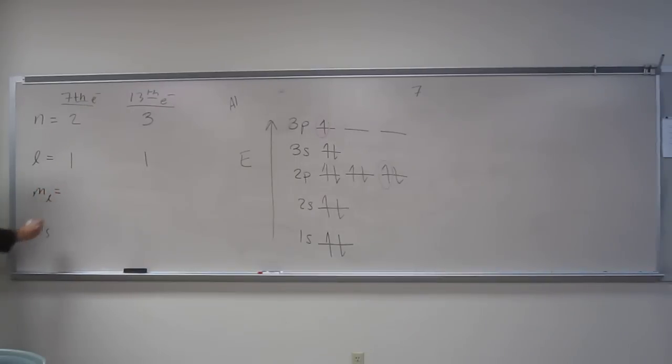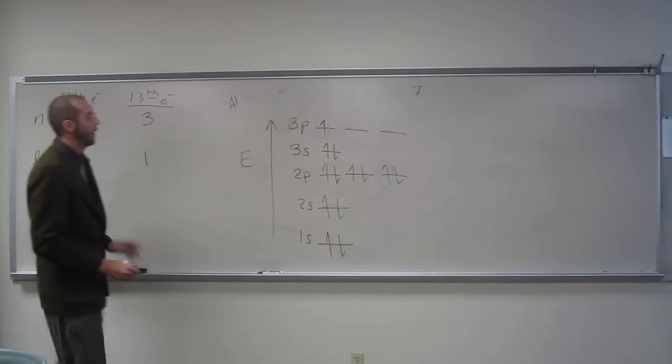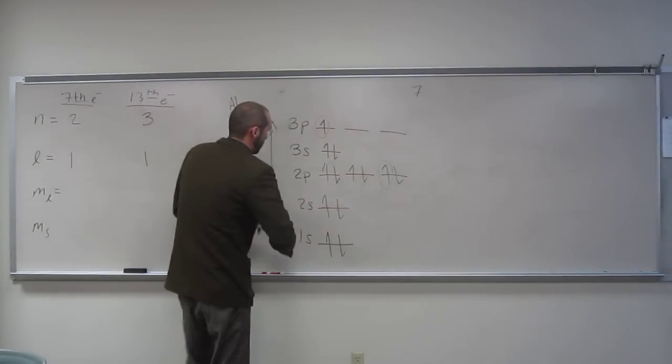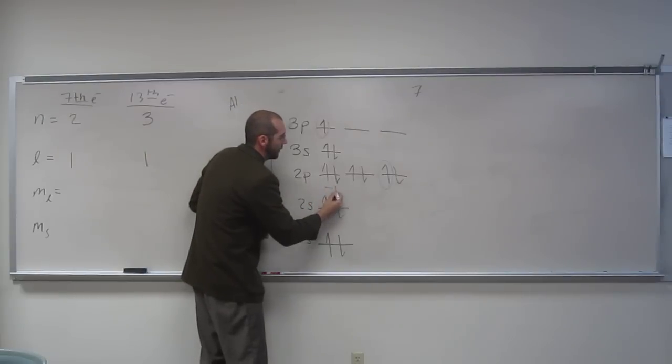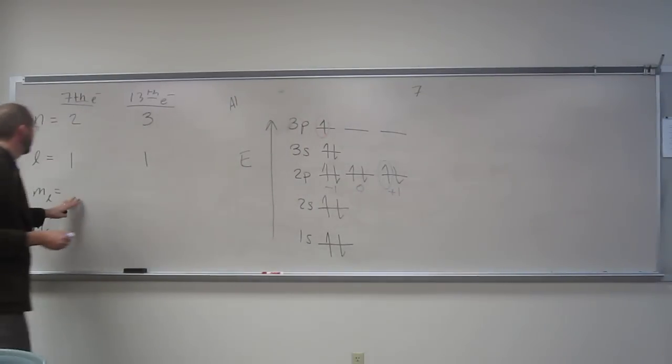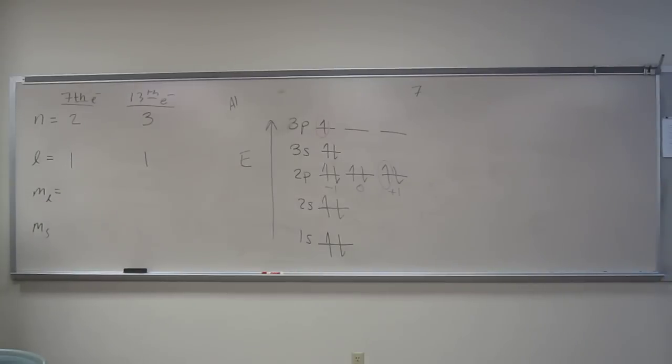Okay, so, here, what would our options be? Negative one, zero, and one, positive one, right? So, let's label those. So, this, here, we'll label them in blue. So, negative one, zero, positive one. So, what would m sub l be here? Positive one, positive one.